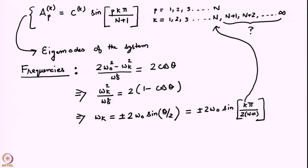Notice that we did not write down any matrices and did not solve any eigenvalue problem. Our guess was chosen so that it could satisfy the boundary conditions — one boundary condition was automatically satisfied, and the right boundary condition had to be explicitly satisfied, leading to an expression for θ. We now have expressions both for the eigenmodes and the frequencies of the system.